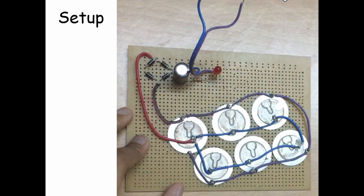This is my setup. As you can see, there are four diodes — the small black pieces. These are the four diodes, indicated with the laser pointer. This is the capacitor. This is the resistor. This is the switch. This is the LED. And these are the six piezo discs — three in series, three in series, and these sets in parallel.